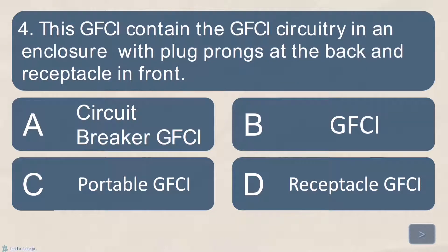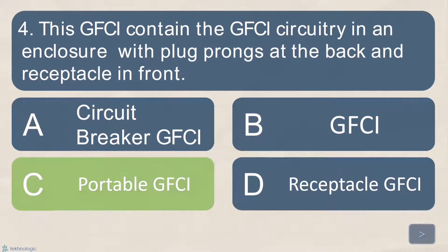Number 4. This GFCI contains the GFCI circuitry in an enclosure with plug prongs at the back and receptacle in front. A. Circuit Breaker GFCI. B. GFCI. C. Portable GFCI. Or letter D. Receptacle GFCI. What is your answer? Very good! It is letter C. Portable GFCI.